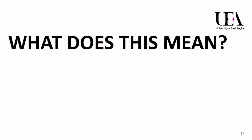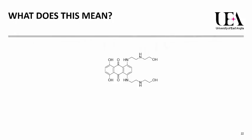So what does this mean? Mitoxantrone itself is already a known drug and it's used for many different conditions — for example metastatic breast cancer, acute myeloid leukemia, and non-Hodgkin's lymphoma. It's also used to treat secondary progressive multiple sclerosis. We thought we knew exactly how it binds and interacts with DNA, but our research has shown that it can do far more than what we initially thought. We are now currently trying to look at how this drug affects gene expression.